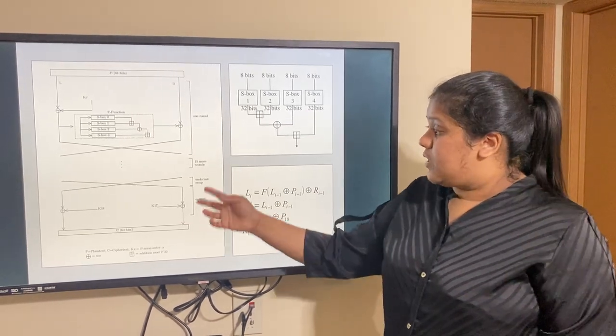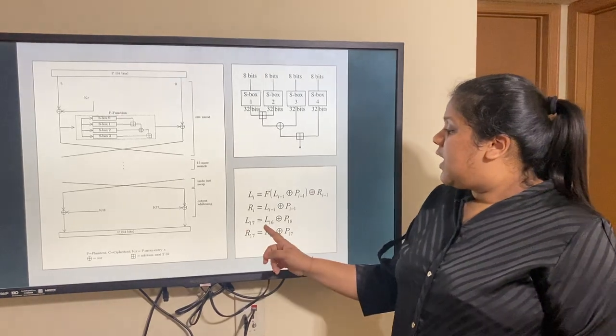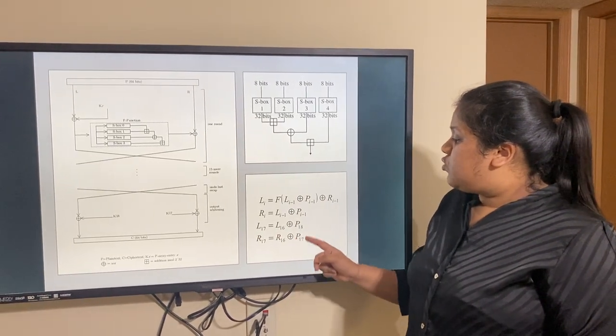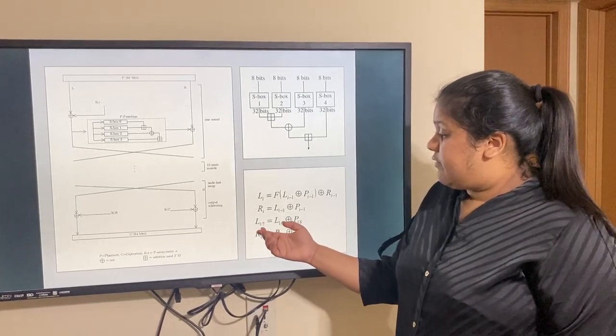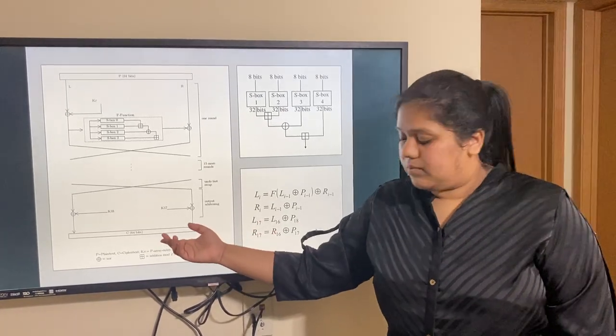Now, for the final step, that is the output whitening. What happens is, L16 and R16 are XORed with the remaining two keys, P17 and P18, in order to get L17 and R17, which is the ciphertext.